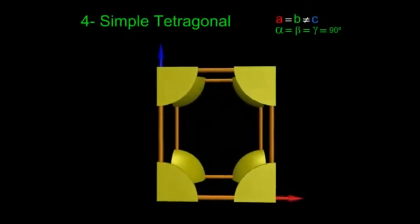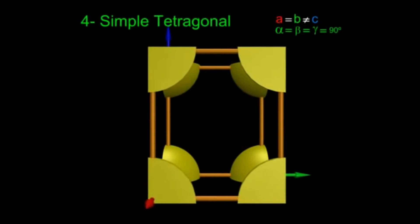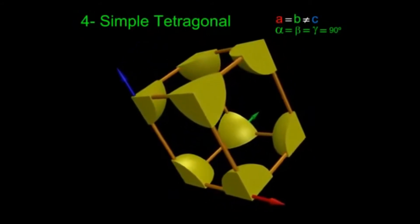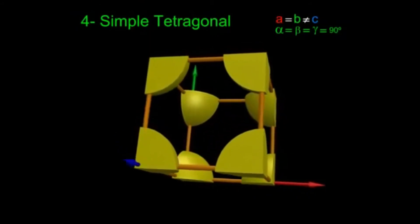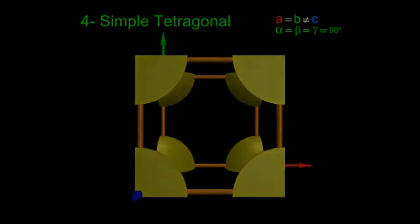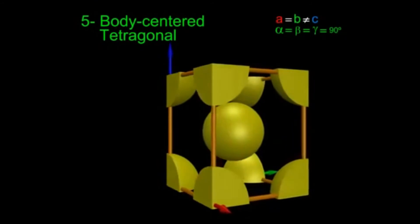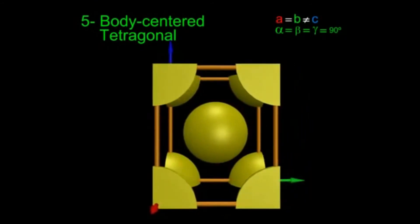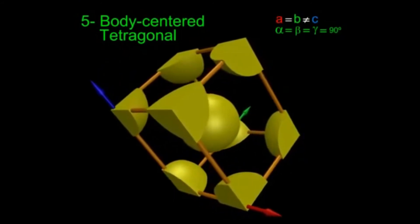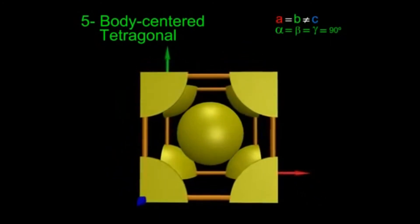The fourth Bravais lattice is the simple tetragonal cell, where two sides are equal but the height is different: a = b ≠ c. All angles equal 90°: alpha = beta = gamma = 90°. This is a primitive cell. The fifth is the body-centered tetragonal cell — same dimensions as simple tetragonal but with an additional atom at the body center.